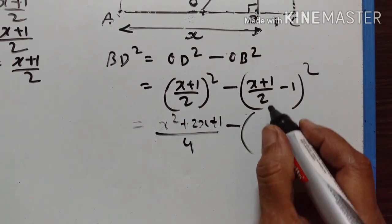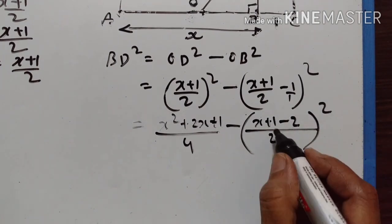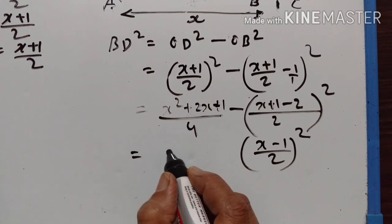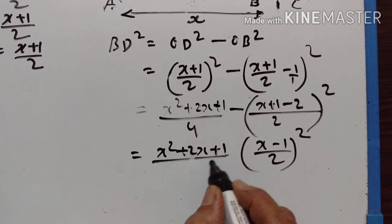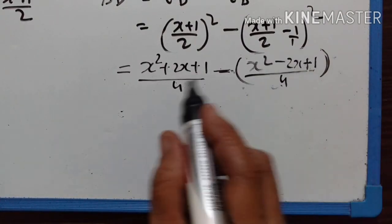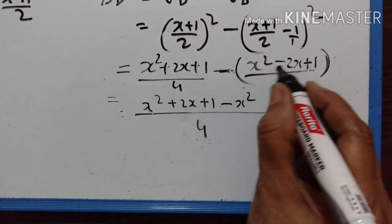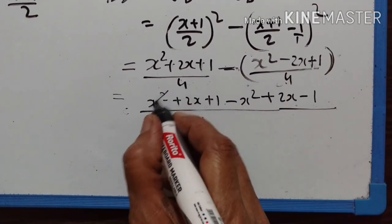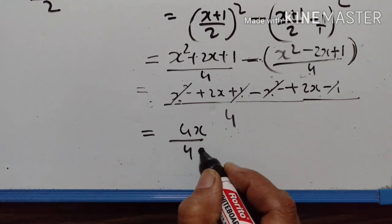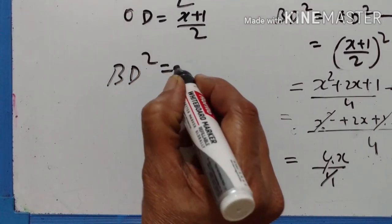Taking the LCM, OB equals x minus 1 upon 2. So BD squared equals x plus 1 upon 2, the whole square, minus x minus 1 upon 2, the whole square. Expanding: x squared plus 2x plus 1 upon 4 minus x squared minus 2x plus 1 upon 4. The x squared terms and the 1 terms cancel, leaving 4x upon 4, which equals x.